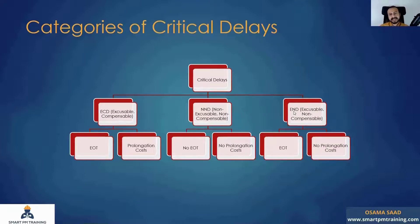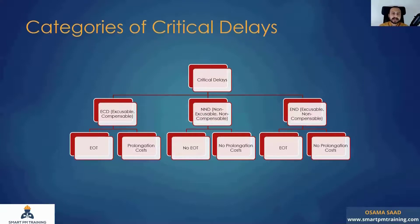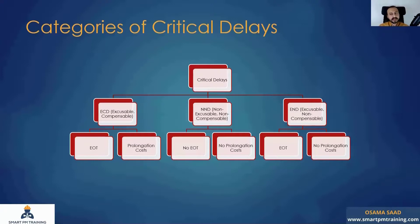The last category is ENT — Excusable but Non-Compensable. There is an EOT entitlement but no prolongation cost. For example, if the contractor submitted an extension of time of three months plus 10 days caused by force majeure — such as an act of God or adverse weather like snowfall — these 10 days are not caused by the employer. They are beyond the employer's control. So the contractor has entitlement to those 10 additional days, but there is no cost entitlement — the employer should not reimburse the contractor for these additional 10 days.